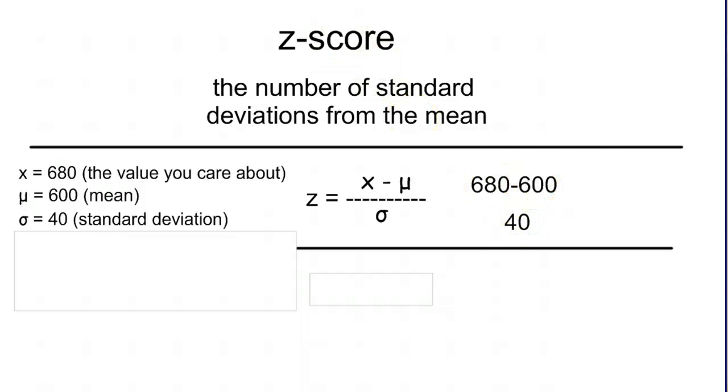680 minus 600 is going to simply be 80 on top. And then on bottom, our 40. 80 divided by 40 is going to give us the exact same answer we got in the last slide without using any formulas, just using our intuition. And it's going to give us a 2.